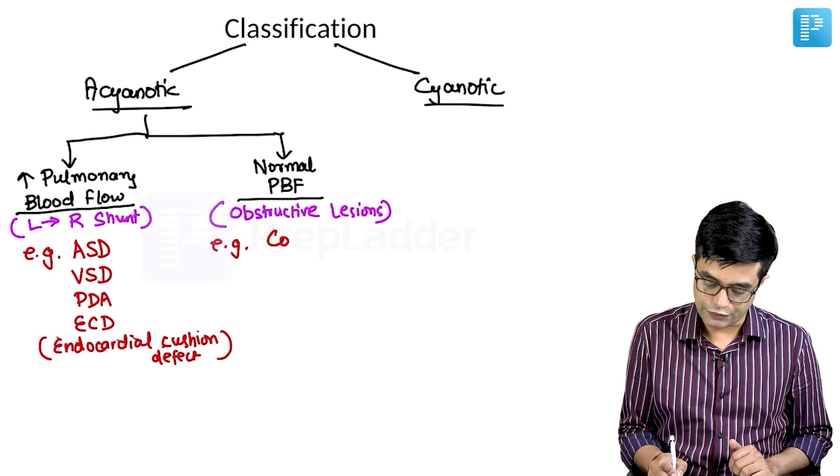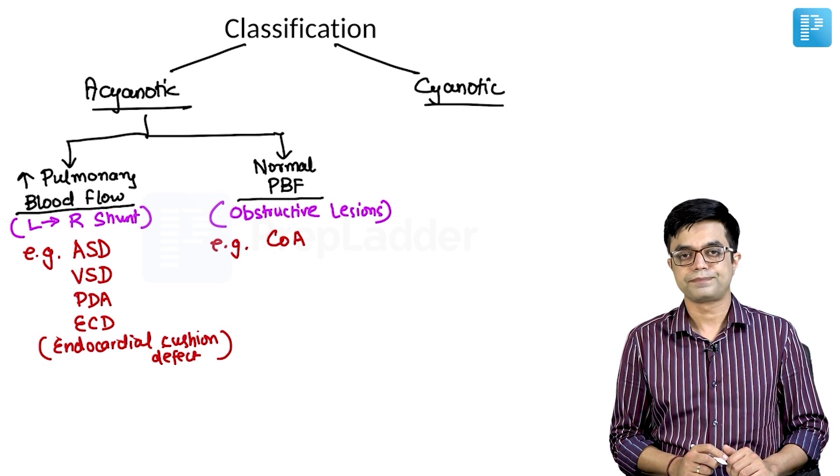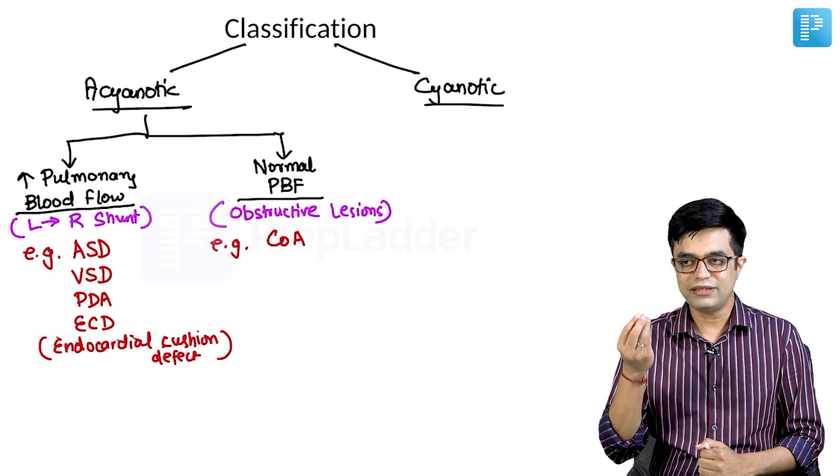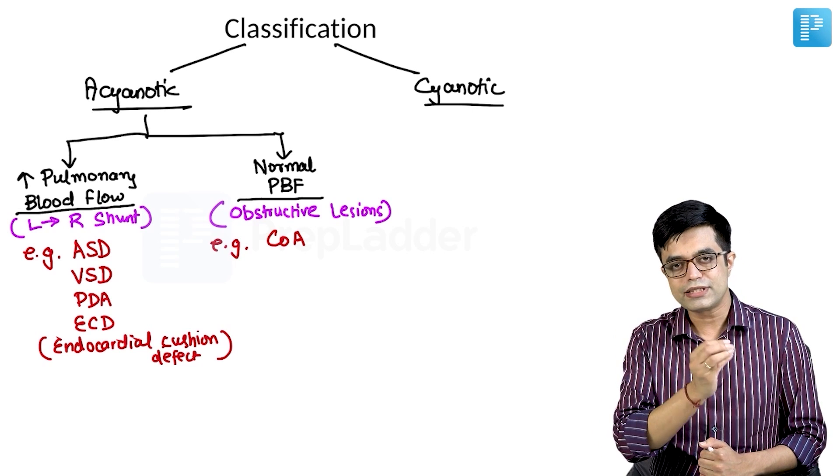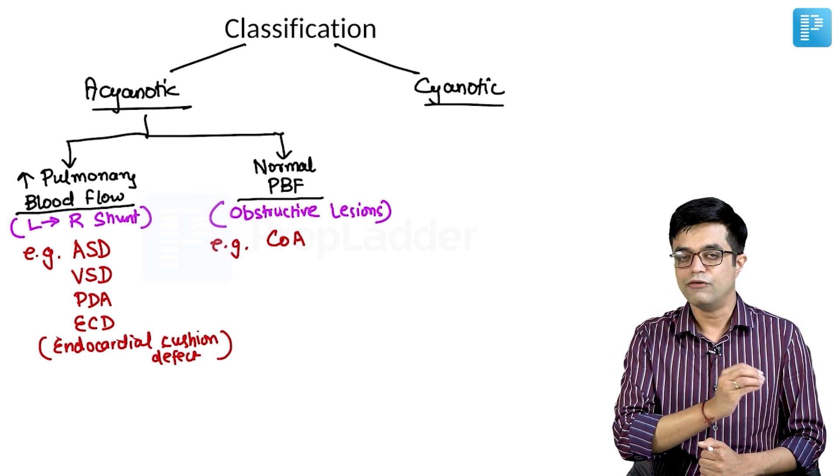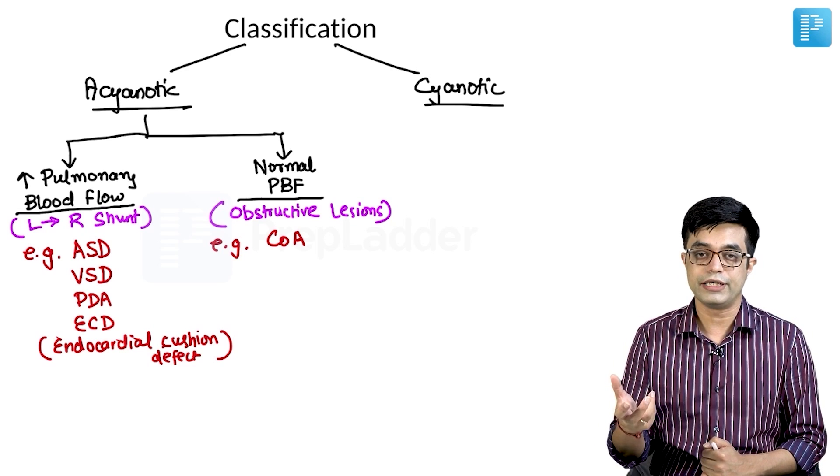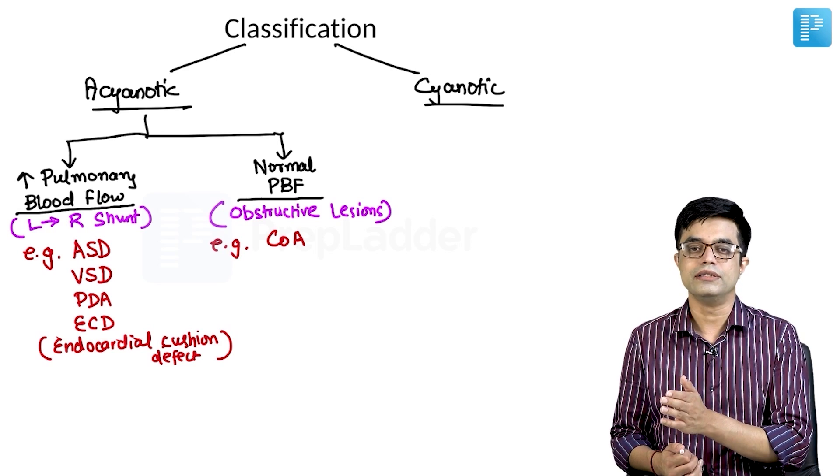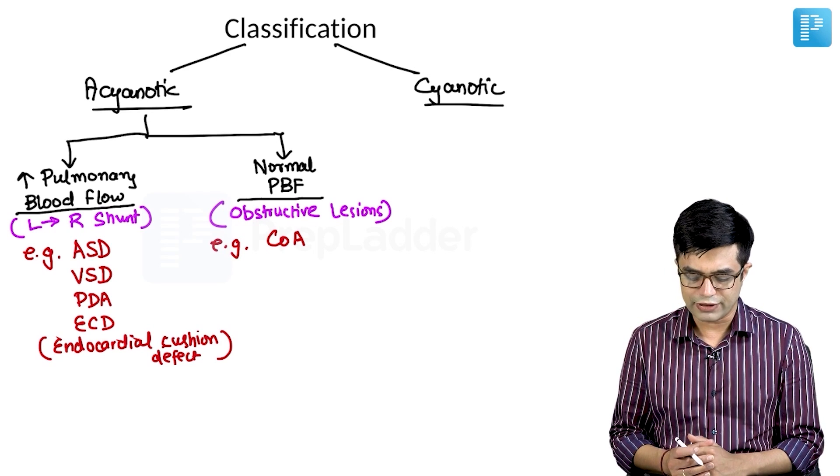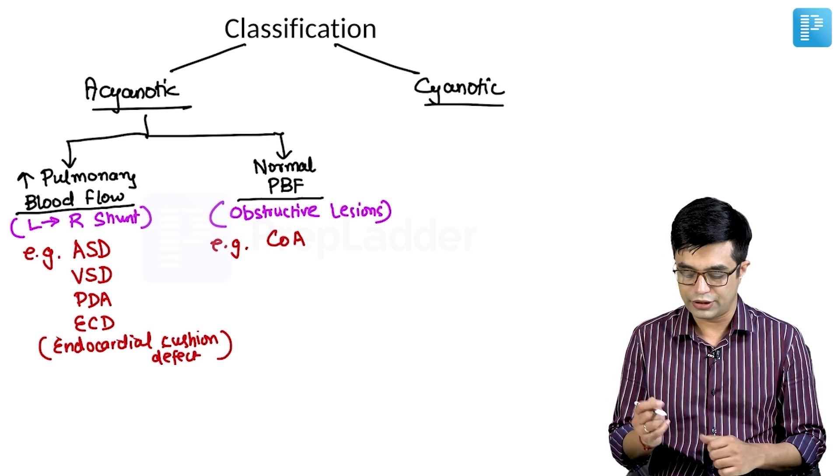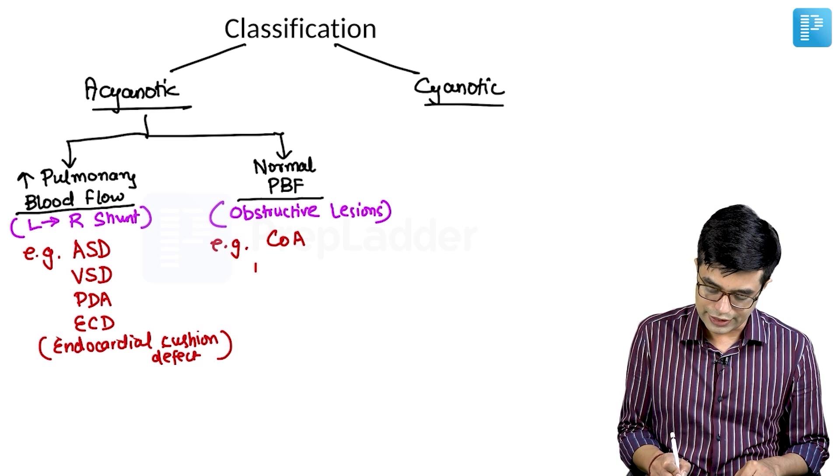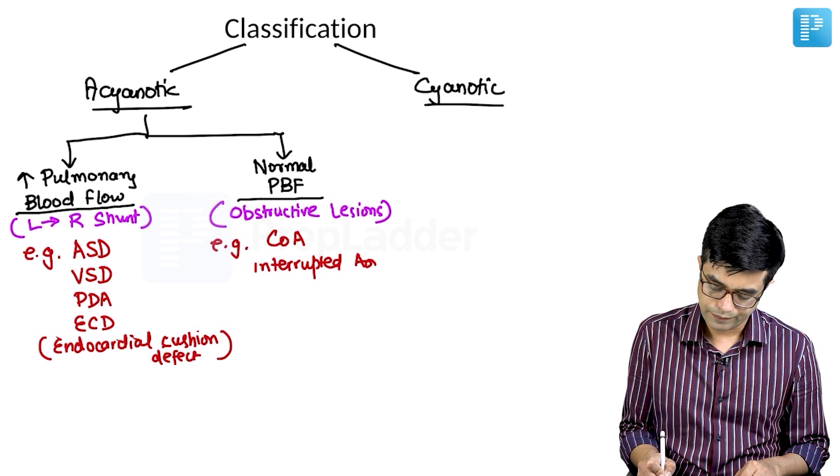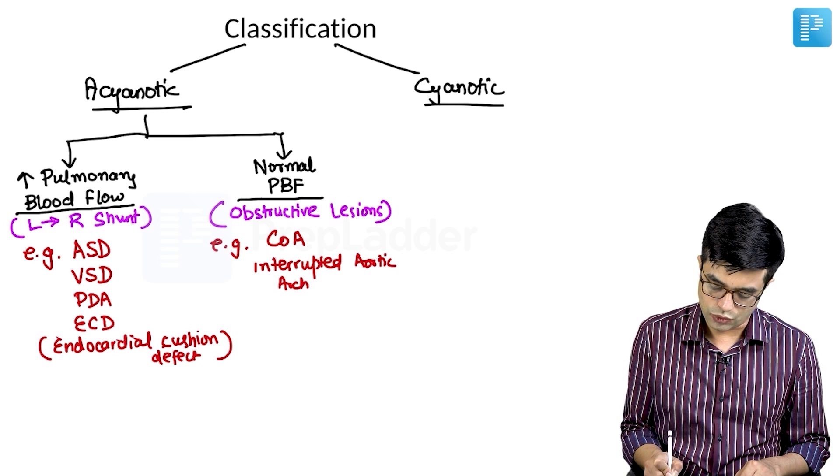The typical acyanotic obstructive lesions with normal pulmonary blood flow include coarctation of aorta as the hallmark finding. As we shall see, coarctation of aorta which is critical, extremely severe form, will manifest in the neonatal period itself. Whereas the mild to moderate coarctation which is the more common variety including the juxtaductal form tends to occur in childhood. So in general, coarctation of aorta is classified as a normal pulmonary blood flow condition. Secondly, it includes conditions like interrupted aortic arch syndrome.